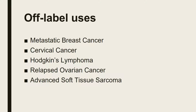Some off-label uses of vinorelbine include metastatic breast cancer, cervical cancer, Hodgkin's lymphoma, relapsed ovarian cancer, and advanced soft tissue sarcoma. IV dosing for metastatic breast cancer is 25 mg/m² every 7 days as a single agent until disease progression or unacceptable toxicity.